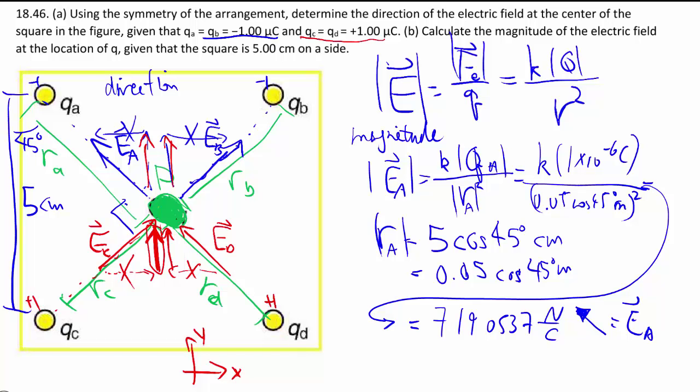My Eb will follow the same exact steps with the same exact distances, so the magnitude is going to be the same except the direction goes that way, 45 degrees.